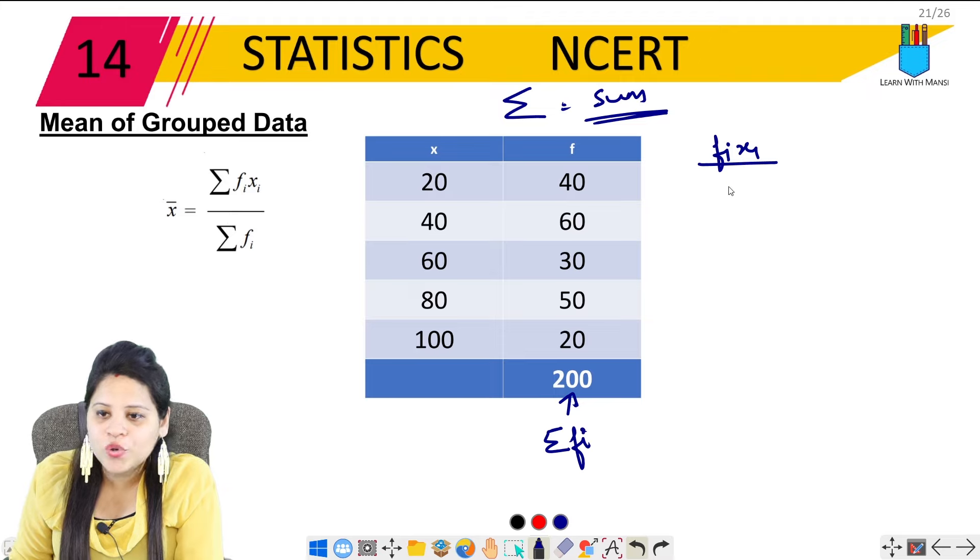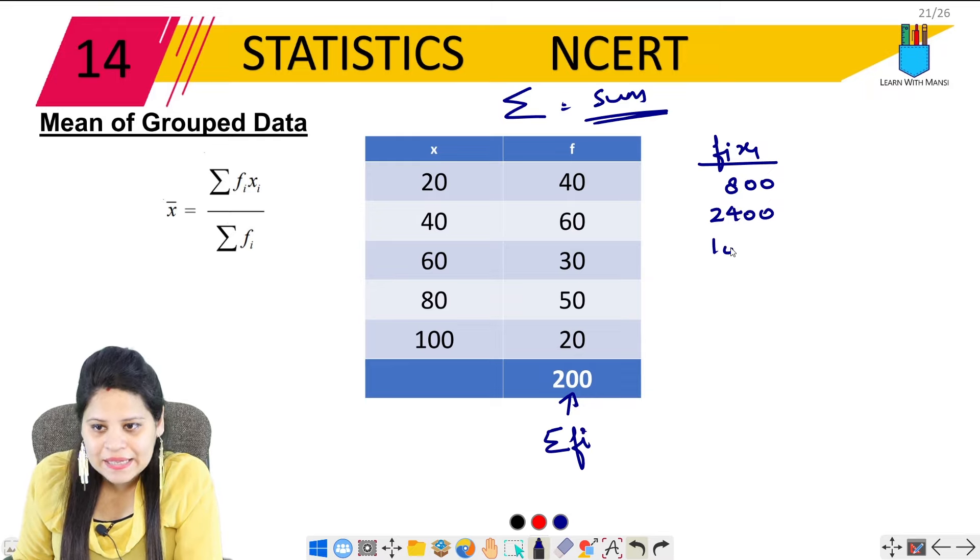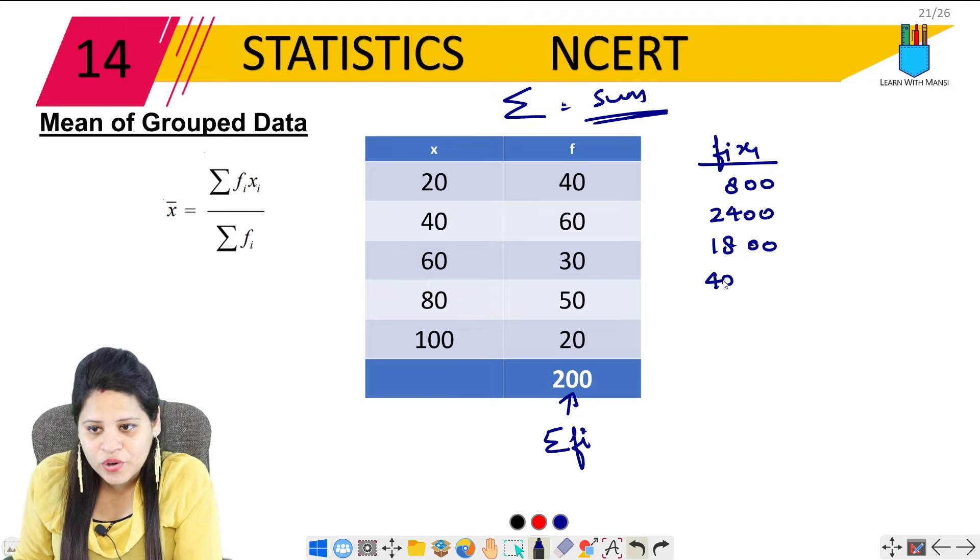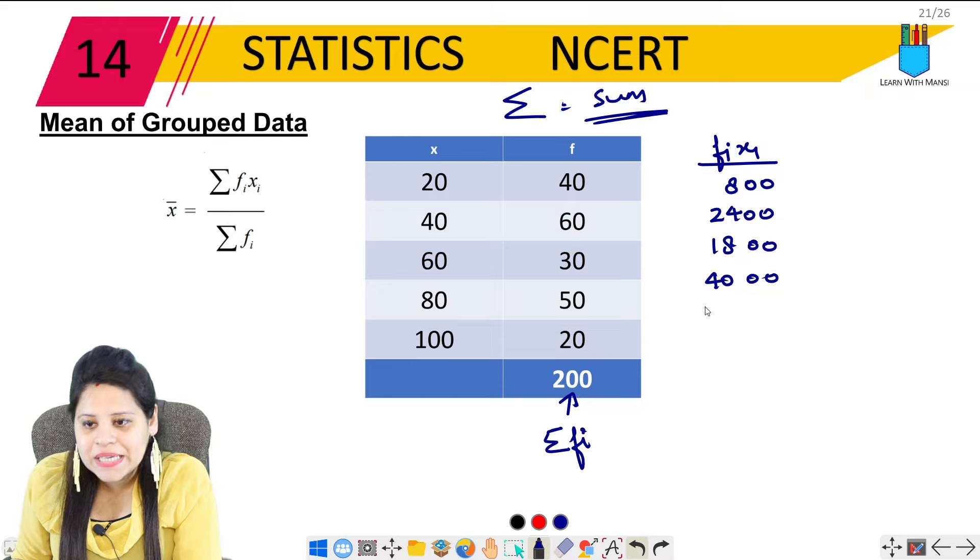Now when we have grouped data without class intervals, the frequency is in this way. Then how will we do it? Here, the formula is summation FI XI upon summation FI. Summation basically means sum. Like here you will see that it already has sum of 200. So what is this 200? This is summation FI, the frequency summation. Now what is the summation FI XI? We have to find this.